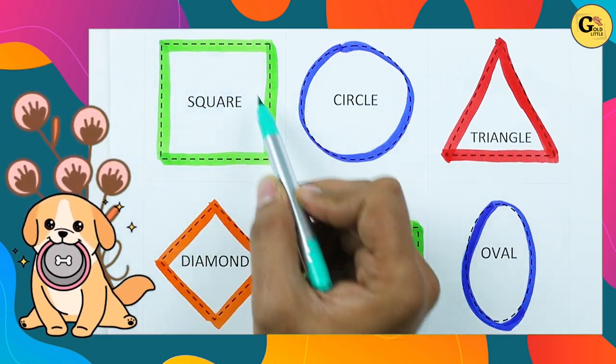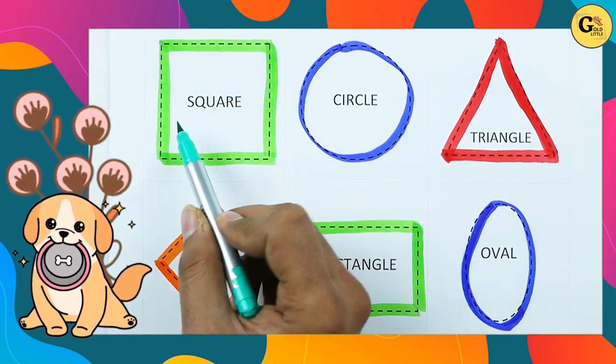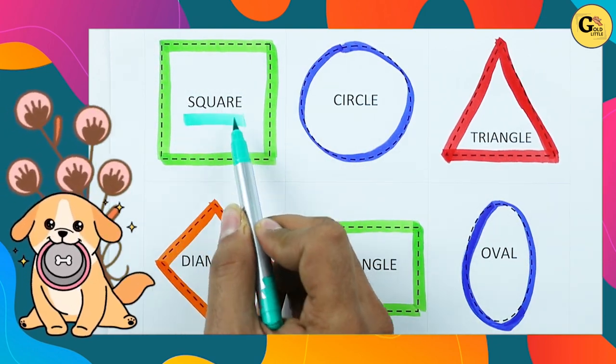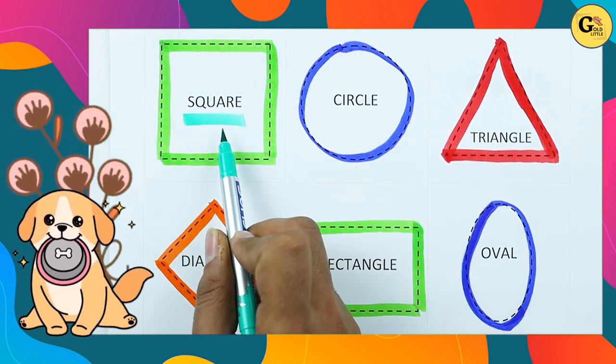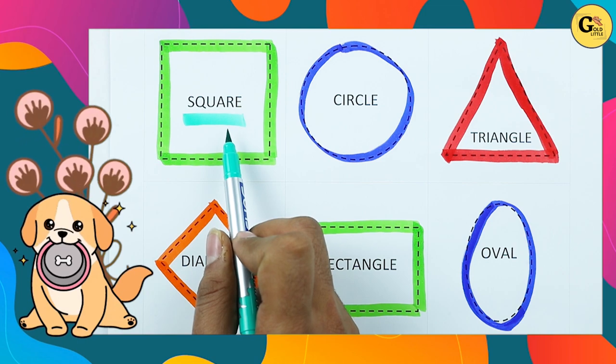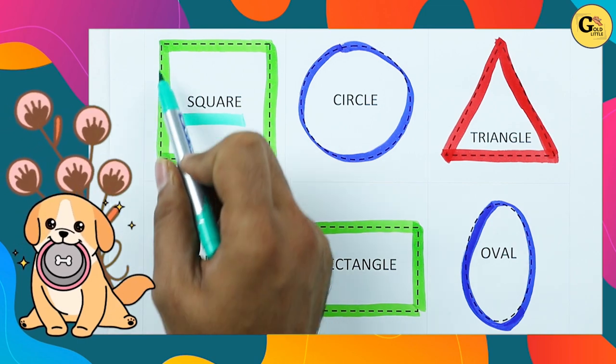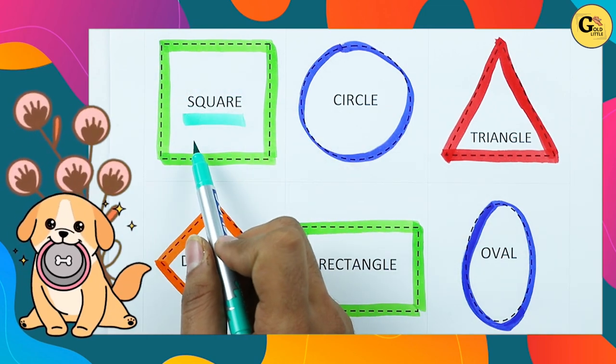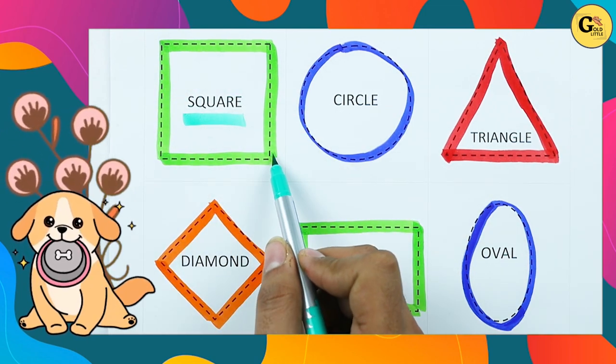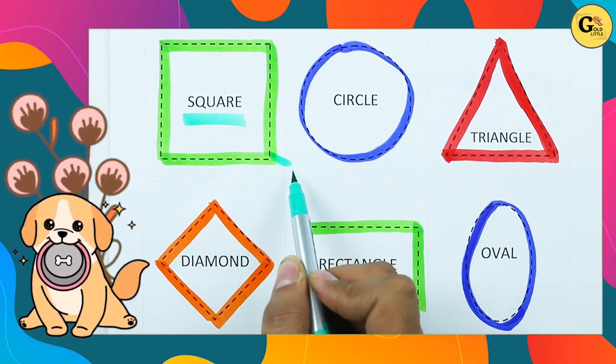Which shape is this? Tell me. Square. S-Q-U-A-R-E. It's a square with green color.